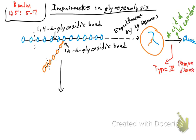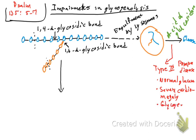So Pompe disease — how is it going to present? The patient is going to have normal glucose. The patient is going to have severe cardiomegaly — a huge heart. The patient also is going to have glycogen accumulations in lysosomes.